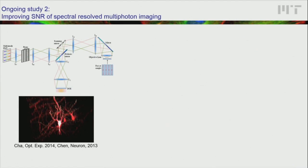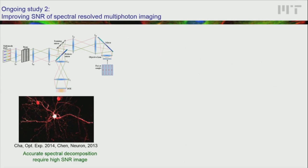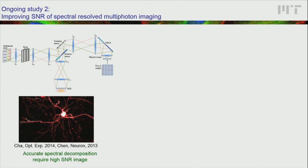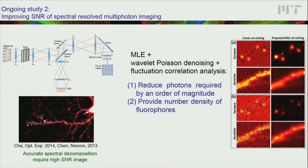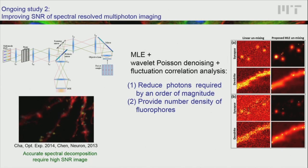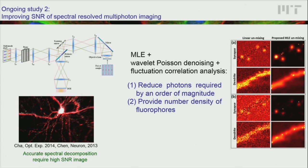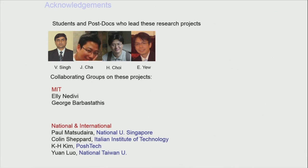Finally, this approach is also very useful for spectral decomposition in multiphoton microscopy. Spectral decomposition requires very high signal-to-noise ratio images, which is generally inconsistent with high-speed imaging. To solve this, we combine maximum likelihood with Poisson denoising and fluctuation correlation analysis. As you can see, we can fairly substantially reduce the number of photons needed for spectral decomposition, while also allowing us to measure the number density of photons for each pixel. I'd like to conclude by thanking all the students and collaborators who have been instrumental to this work. Thank you very much.